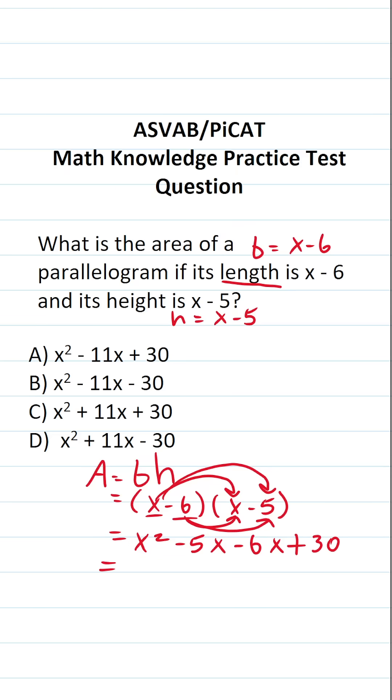This isn't an answer choice because we can simplify this expression by combining like terms. So this becomes x squared minus 5x minus 6x are like terms. Minus 5x plus minus 6x is minus 11x plus 30.